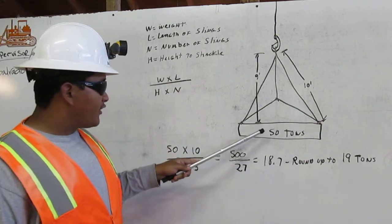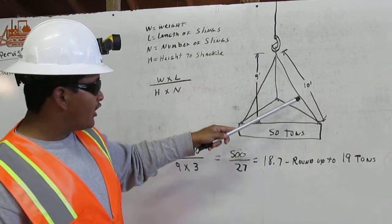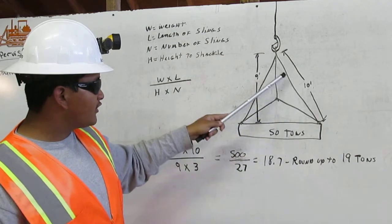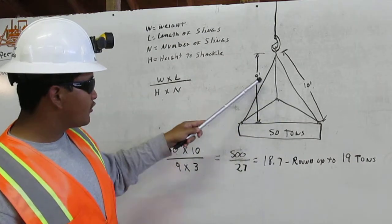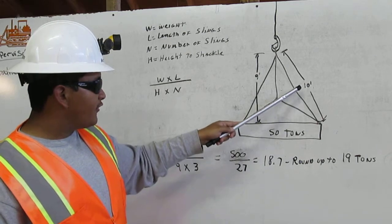Here we got the 50 ton load. And here we got the slings. Three slings: 1, 2, 3. Each sling is 10 feet.